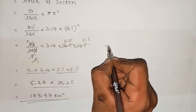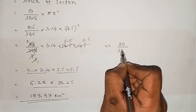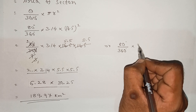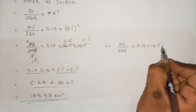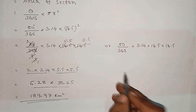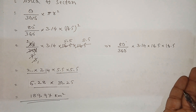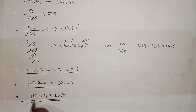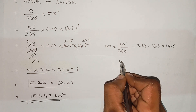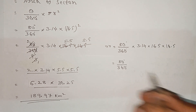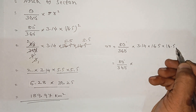Step: 80 divided by 360 degrees, into 3.14, into 16.5 into 16.5. Convert to decimal form, then simplify the expression.